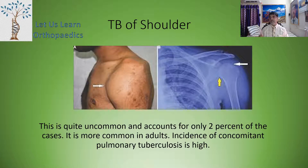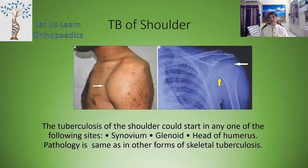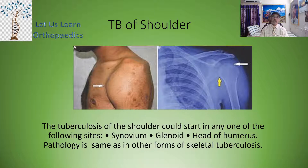Let us start with the first topic today: TB of the shoulder joint. This is quite uncommon and accounts for only 2% of cases. It is more common in adults. Incidence of concomitant pulmonary tuberculosis is high. The tuberculosis of the shoulder joint could start at the synovium, at the glenoid, or at the head of the humerus. The pathology is the same as in other forms of skeletal tuberculosis, as discussed in our previous videos.